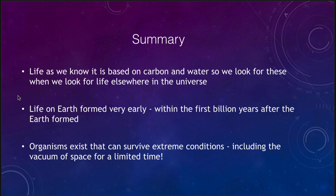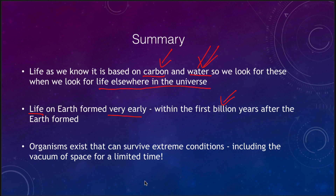To summarize: life is based on carbon and water, which we use as our basis for looking for life elsewhere in the universe — though that does introduce a bias as to where we look. Life on earth formed very early, within the first billion years after the earth formed, and has been here for the vast majority of earth's history. We also talked about organisms like extremophiles, including the tardigrade, that can survive extreme conditions including the vacuum of space for more than a week. That concludes our lecture on astrobiology — we'll be back again next time for another topic in astronomy.